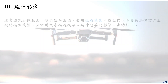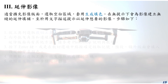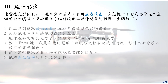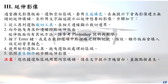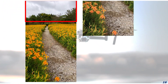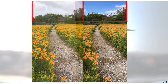延伸影像：适当扩充影像版面，选取空白区域，套用生成填色。在无提示下会为影像建立无缝的延伸填补。至于用文字描述提示延伸影像的步骤如下：注意，想要依据选取范围周围内容填补选取范围，请在文字输入提示方块留白，直接点按产生。本例示范有文字描述提示方式。